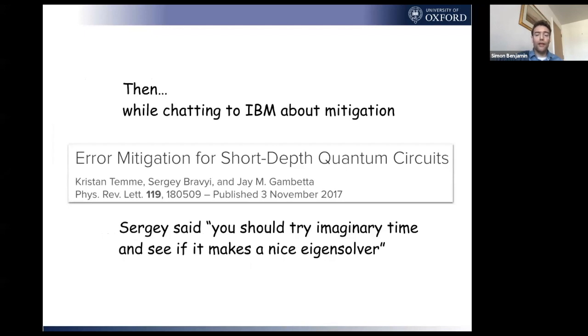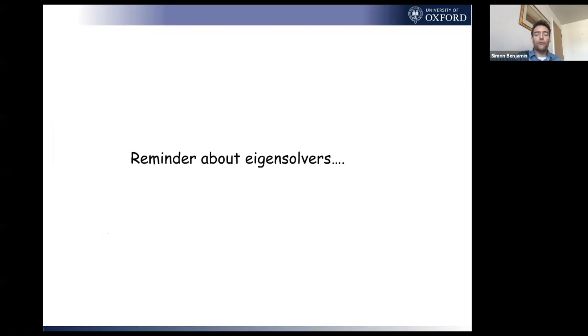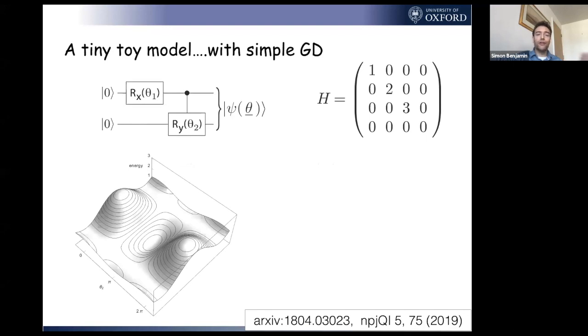What happened next was we got chatting to the guys at IBM about error mitigation. Sergei made a suggestion to us, he said, you should try imaginary time and see if that makes for a nice eigensolver, which turned out to be a great suggestion. Let me just quickly remind you about eigensolvers, which tend to be the absolutely bread and butter use of the variational technique. I'm going to give it to you in the context of a super toy model that we can all solve.